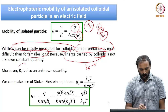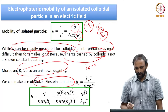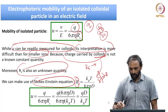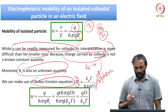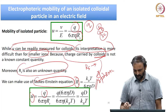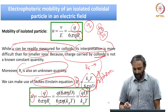Instead of having these unknown quantities, one can use the Stokes-Einstein relation to substitute for Rs — the radius of the particle — which is valid for a spherical particle moving in a fluid. So U, which is Q divided by 6πη·Rs, becomes, after substituting KbT divided by 6πη·D for Rs (and canceling 6πη), the electrophoretic mobility equals Q times D divided by KbT, where D is the diffusivity of the particle.